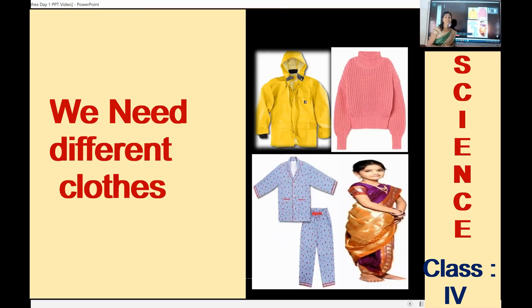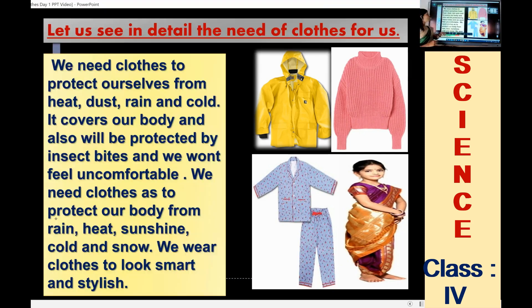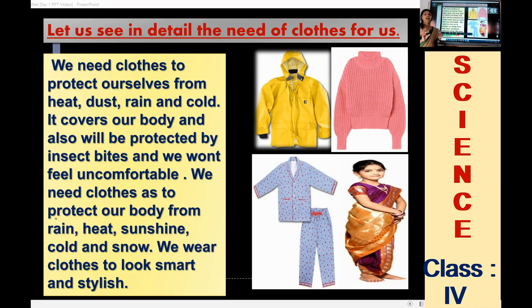We are using different types of clothes according to the season as well. Here I have shown you the first picture — that is a raincoat. In the rainy season, we wear a raincoat. In winter season, we wear woolen clothes. According to our occasions, functions, and different programs, we wear different types of clothes. Clothes protect us from heat, dust, rain, and cold. They cover our body and protect it from rain, heat, sunshine, cold, and snow.